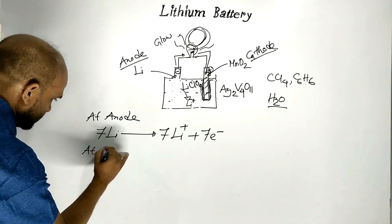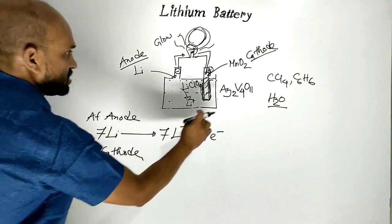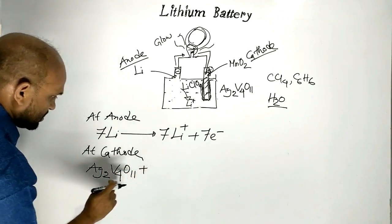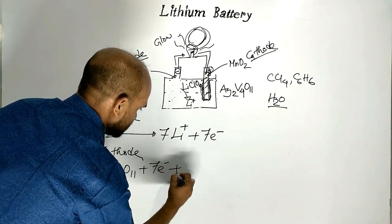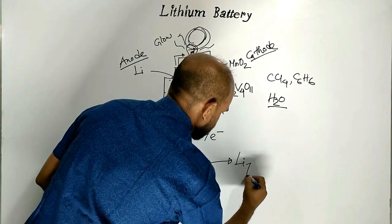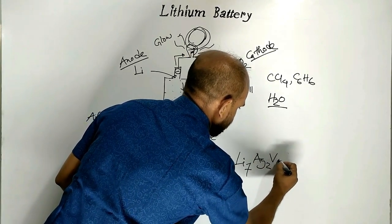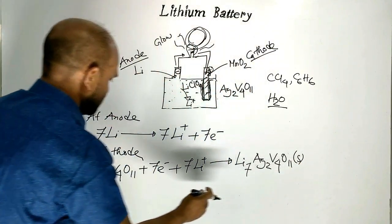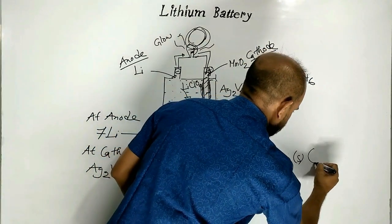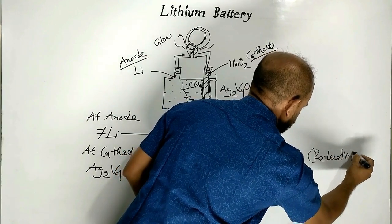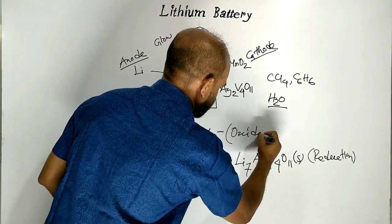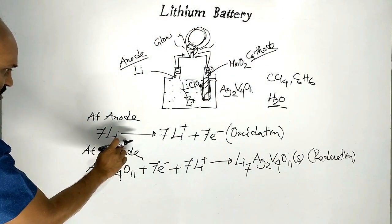Now the reaction at the cathode: silver vanadium oxide receives these seven electrons along with lithium ions. As a result, lithium₇ silver vanadium oxide is formed. Silver vanadium oxide receives electrons — that is why this is a reduction reaction. And lithium releases electrons — that is oxidation.